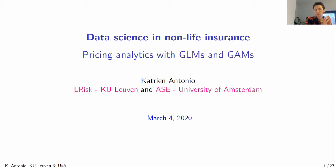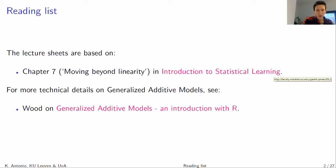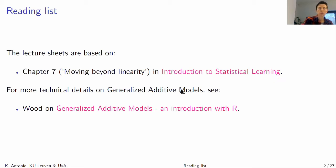The idea for today is to build pricing models using generalized additive modeling tools. You have the lecture sheets on your screen. It's very important to keep in mind there is a very nice chapter from the book 'An Introduction to Statistical Learning' by Hastie, Tibshirani and co-authors. I'll be discussing essentially chapter 7 from that book, entitled 'Moving Beyond Linearity.' We're going to step beyond GLMs and replace them with something more flexible.